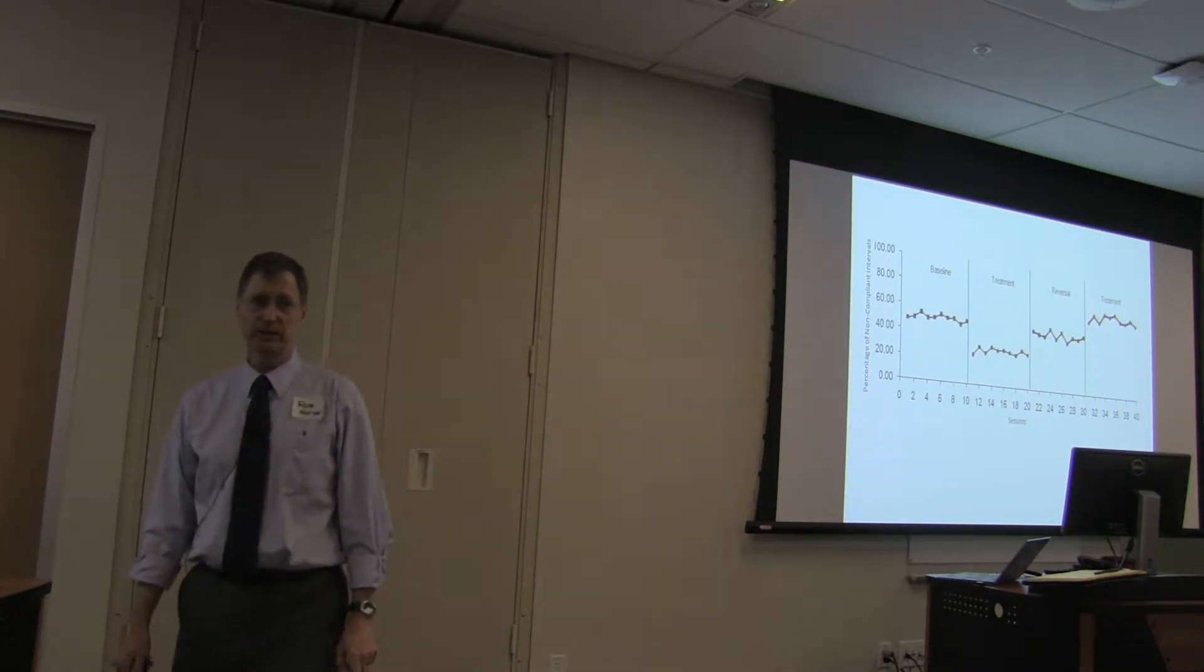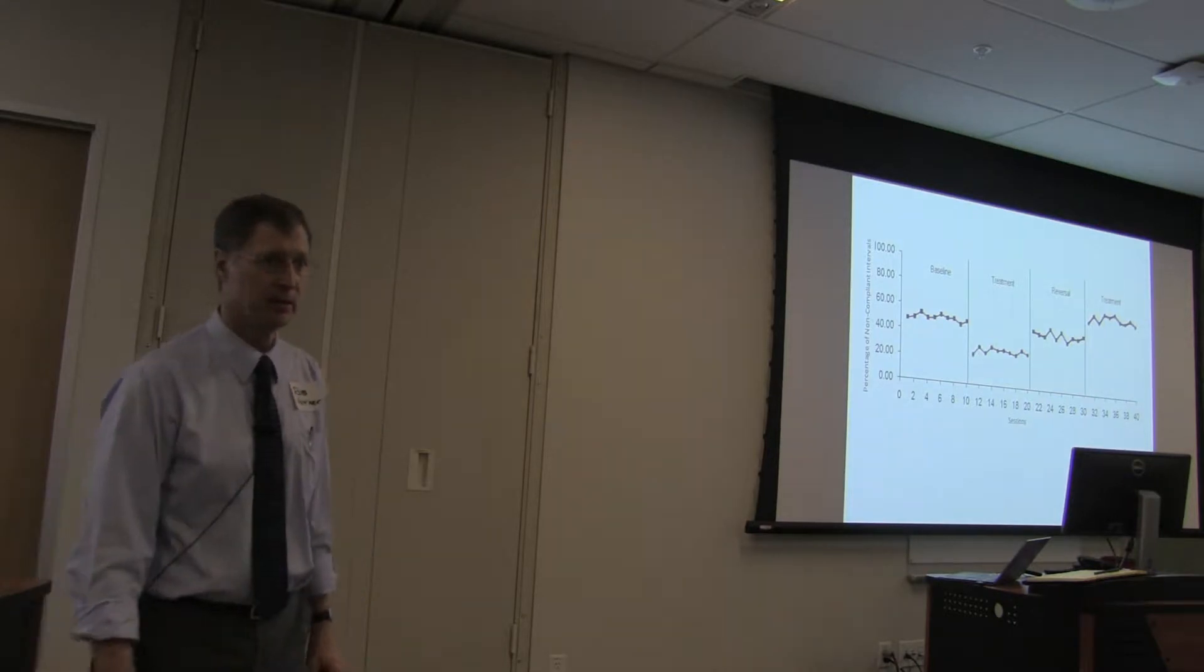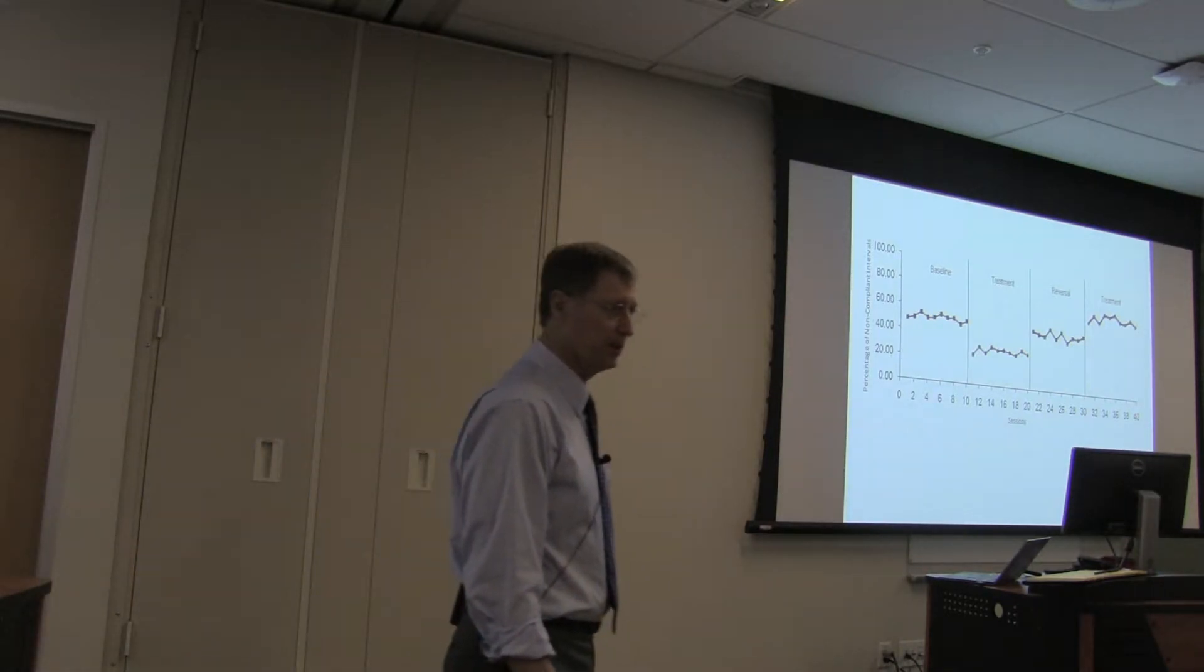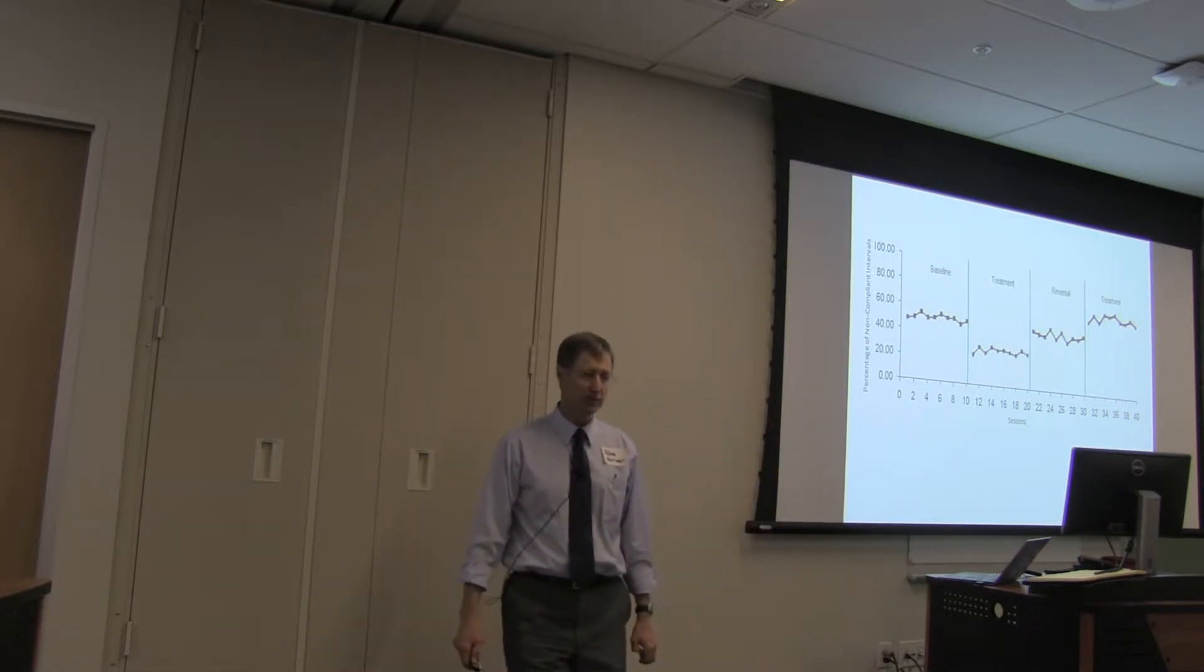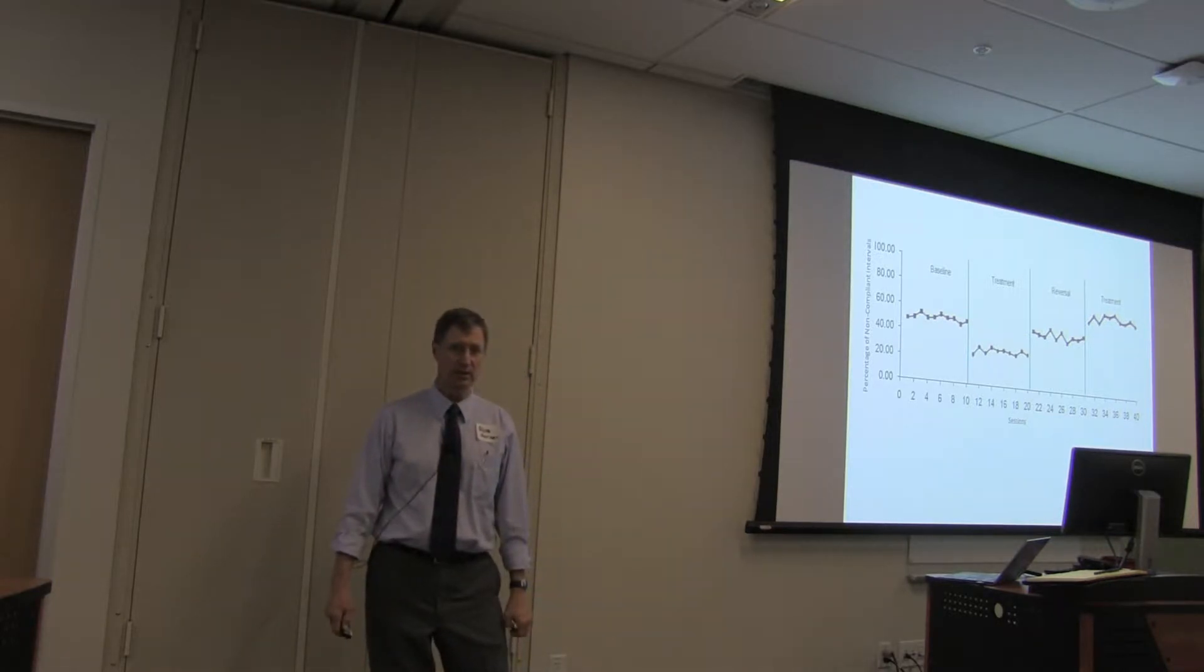Level trend variability. Observed. Predicted. Level trend variability. Observed. Predicted. Level trend variability. Observed. Predicted. Make a decision. Scale of 1 to 7.